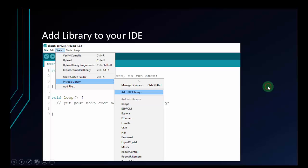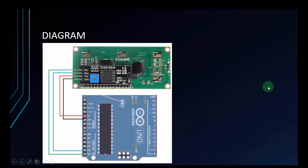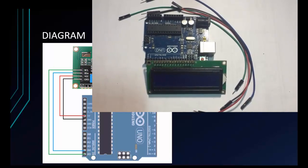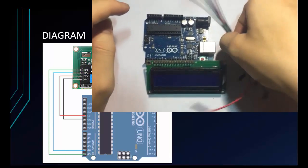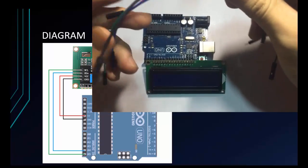Now let's connect the circuit according to this diagram. I have the LCD with I2C support and the Arduino. We connect 5V to VCC, GND to GND, pin A4 to SDA, and pin A5 to SCL. I will use 4 wires — black, green, blue, and red — just like the diagram.